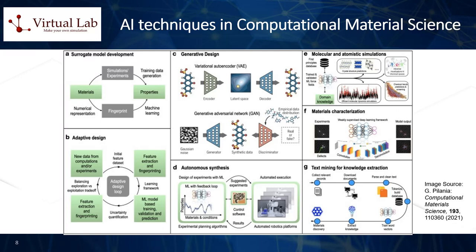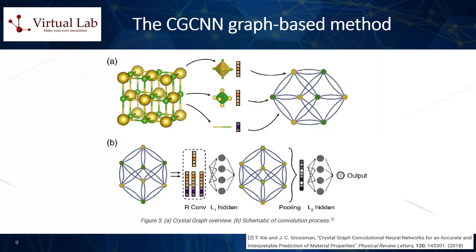Hence, if the lattice structure is represented as a graph and the corresponding atomic information is inserted in the model as input parameters, one can make useful predictions on the structure-property relations of the material under investigation. One popular graph-based method for prediction of crystal structures and their associated physical properties is known as the crystal graph convolutional neural network, or CGCNN.